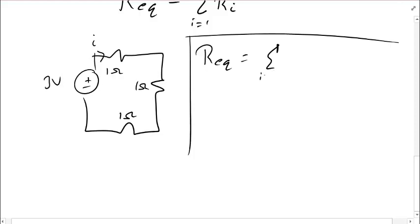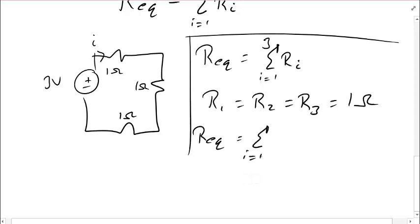The first step in simplifying a circuit is to compute what is REQ. REQ is the sum from i equals 1 to N, in this case N is 3, I have 3 resistors, of Ri. In my case, R1 equals R2, which equals R3, which equals 1 ohm. So, REQ is the sum from 1 to 3 of 1 ohm, which is 3.